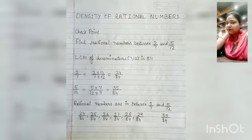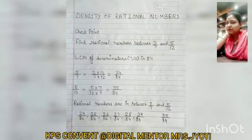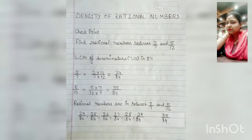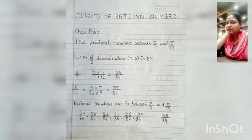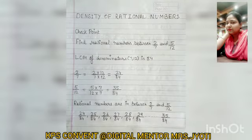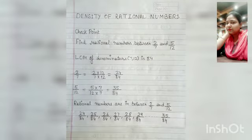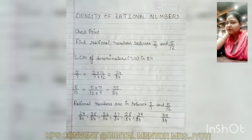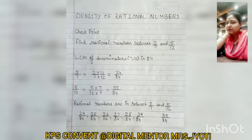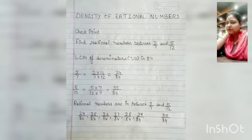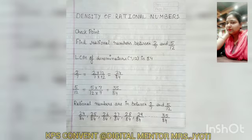As you can see on the screen, our first question is: find rational numbers between 2 upon 7 and 5 upon 12. First we find out the LCM of the denominators. It's 84. Now we change the rational numbers to have the denominator 84.